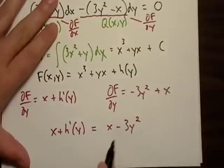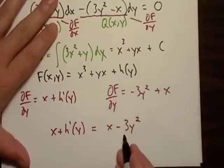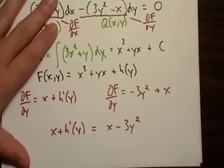So, h prime of y, well, if I want to, if h prime of y is equal, well, basically, yeah. h prime of y is equal to negative three y squared. Okay.